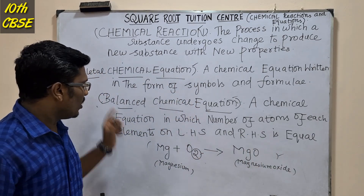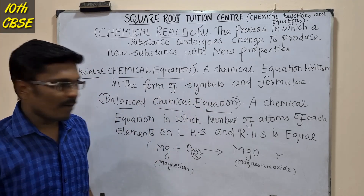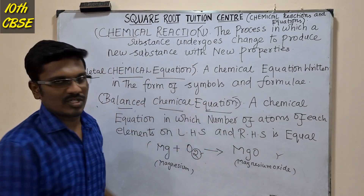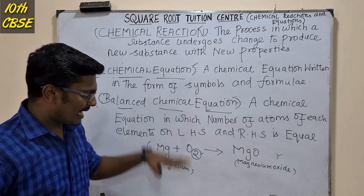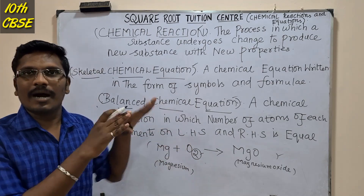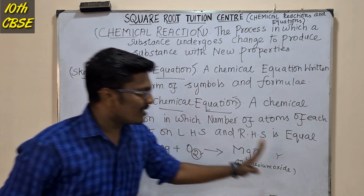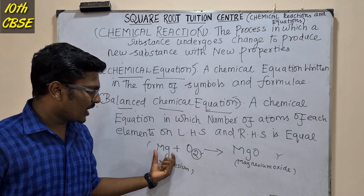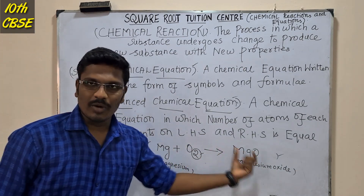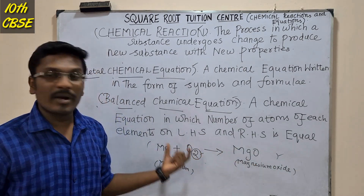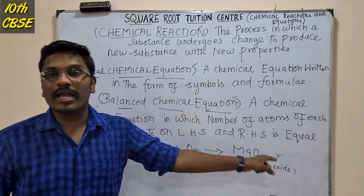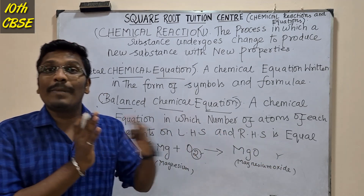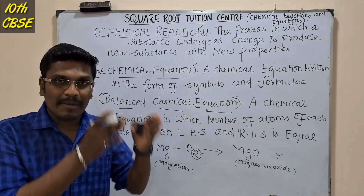And then we go to the balanced chemical equation. The number of atoms of each element on the LHS must equal those on the RHS. We need to balance the chemical equation. On the oxygen side, we have two molecules of oxygen, so we need to balance accordingly.